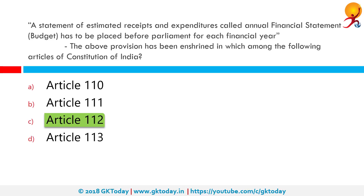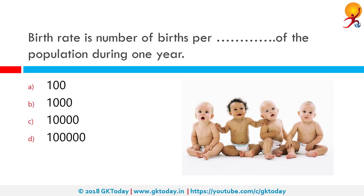The person through whom the President acts is the Finance Minister, who is known as the custodian of the nation's finances. The budget gives a complete picture of the estimated receipts and expenditures of the Government of India for that year, based upon the budget figures of the previous years.